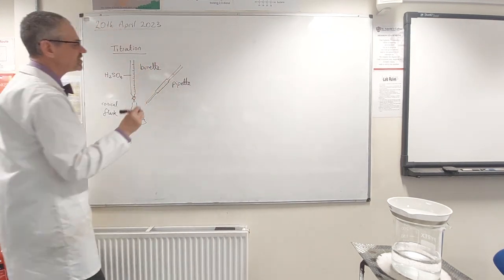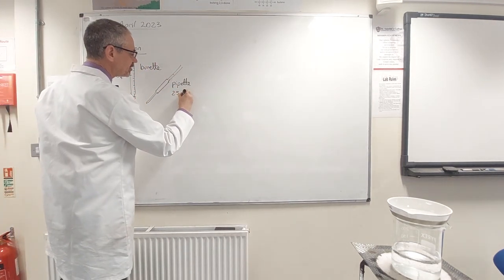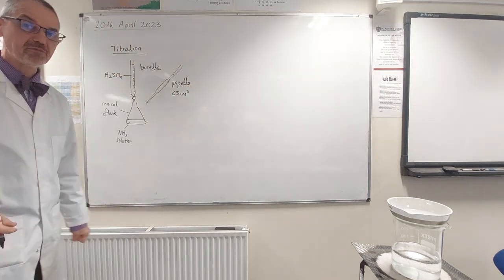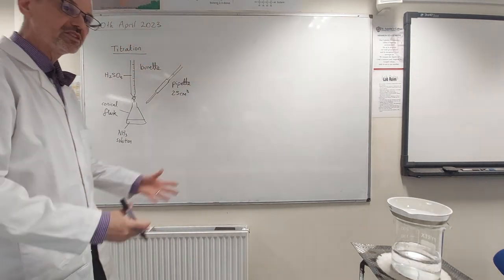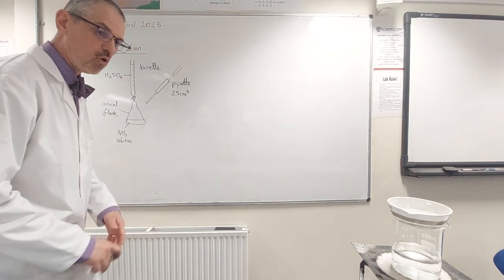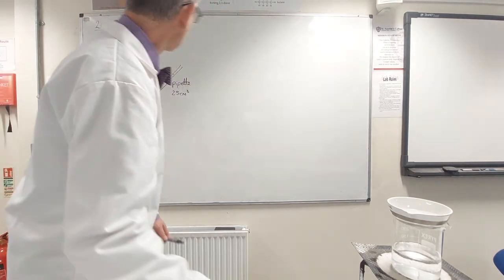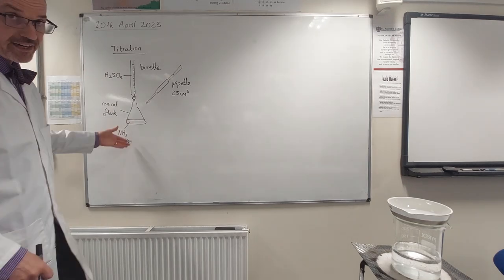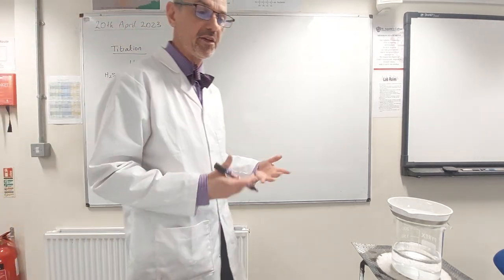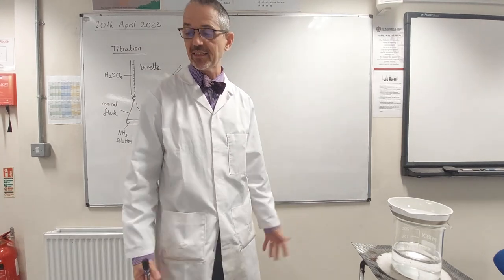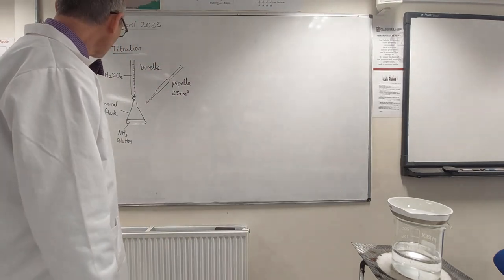So pipettes come in a variety of shapes and sizes. This was a 25 centimeter cubed pipette, which means it can measure exactly 25 centimeters cubed and no more, no less. Whereas the burette can measure anything from 0 to 50 centimeters cubed. Obviously that's the point. We don't know how much acid we're going to add until we've added it.